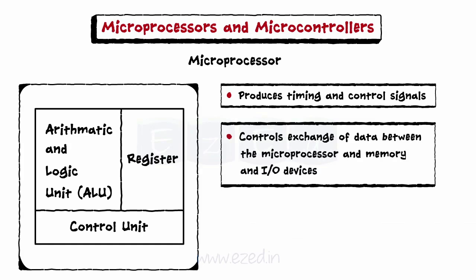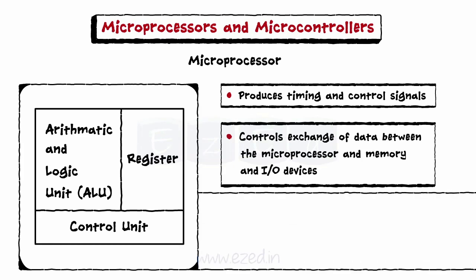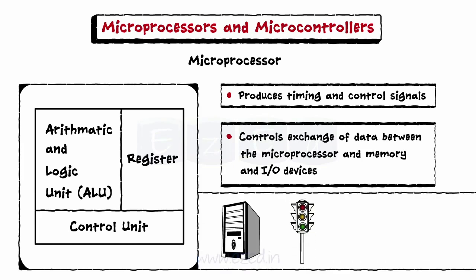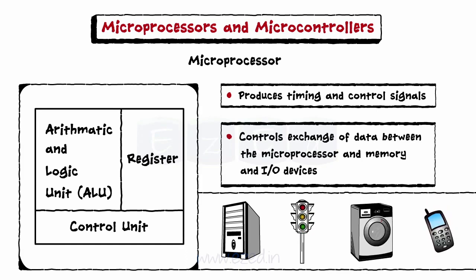The different applications of microprocessors include CPUs of computers, traffic control signals, industrial applications like washing machines, mobile phones, and more.